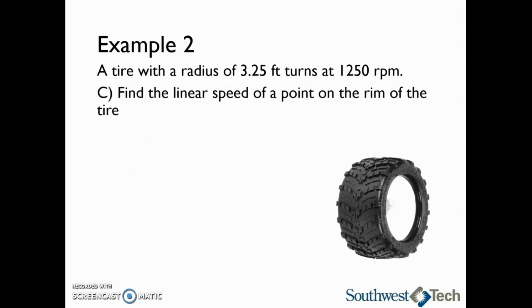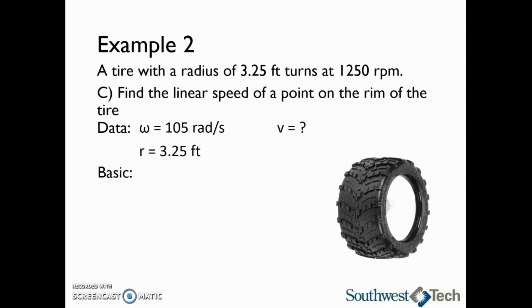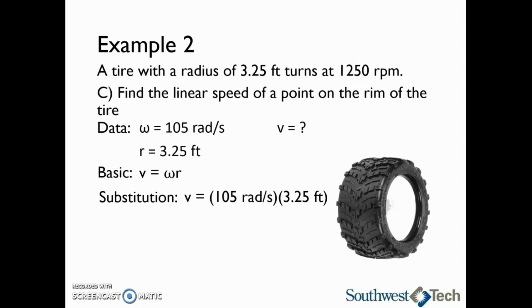Last, we want to find the linear speed of a point on the rim of the tire. The angular speed is 105 radians per second, and remember, we need the angular speed in radians per second in order to find the linear speed. The radius of the tire is 3.25 feet. We are trying to find v, the linear velocity. Using v equals omega times r, we substitute in: v equals 105 radians per second times 3.25 feet. This gives us a linear speed of 341 feet per second.